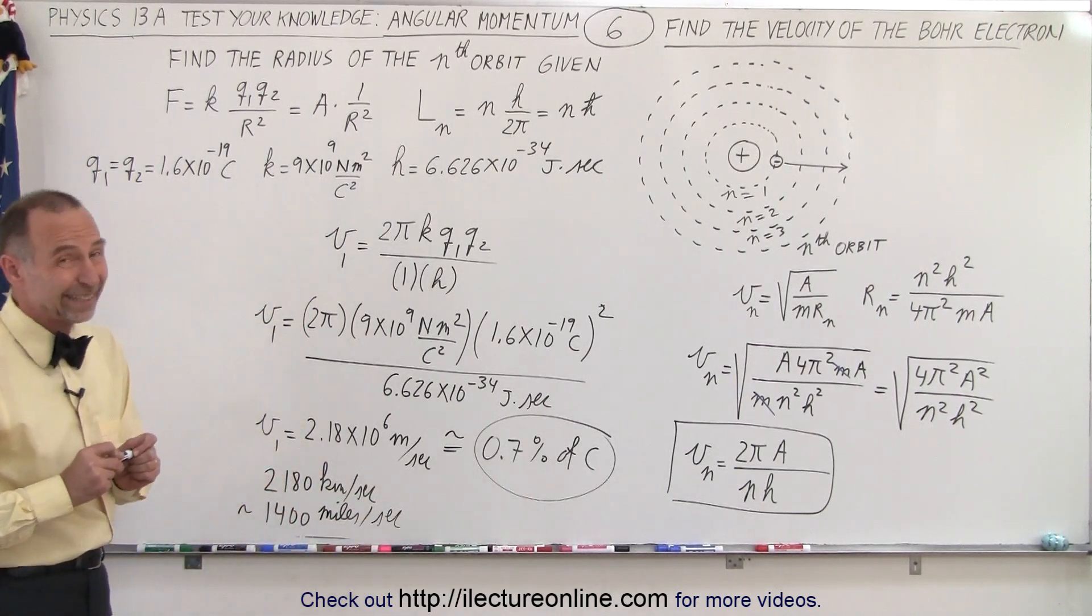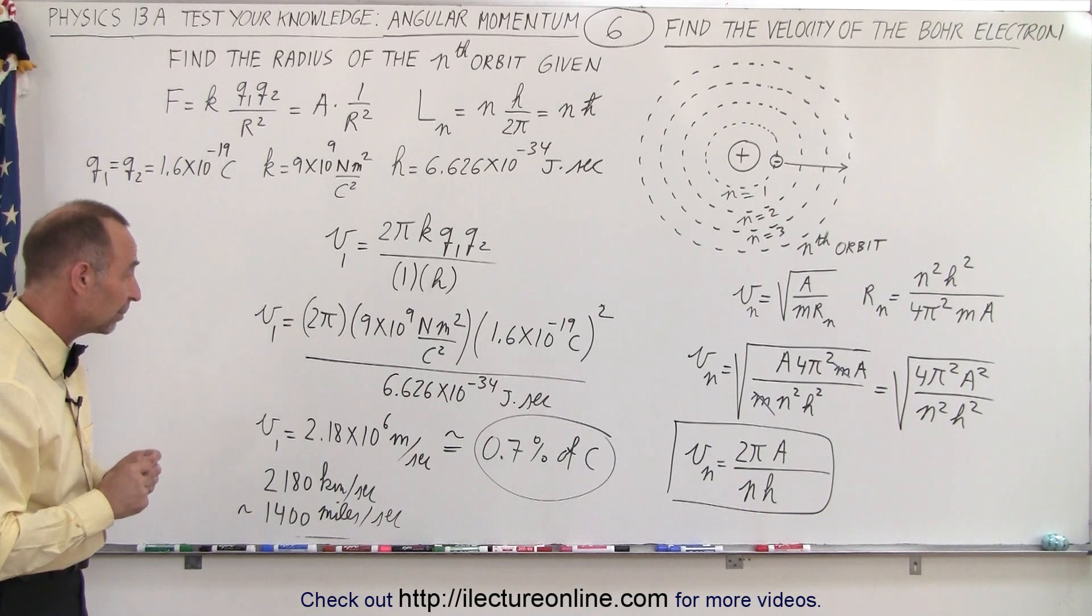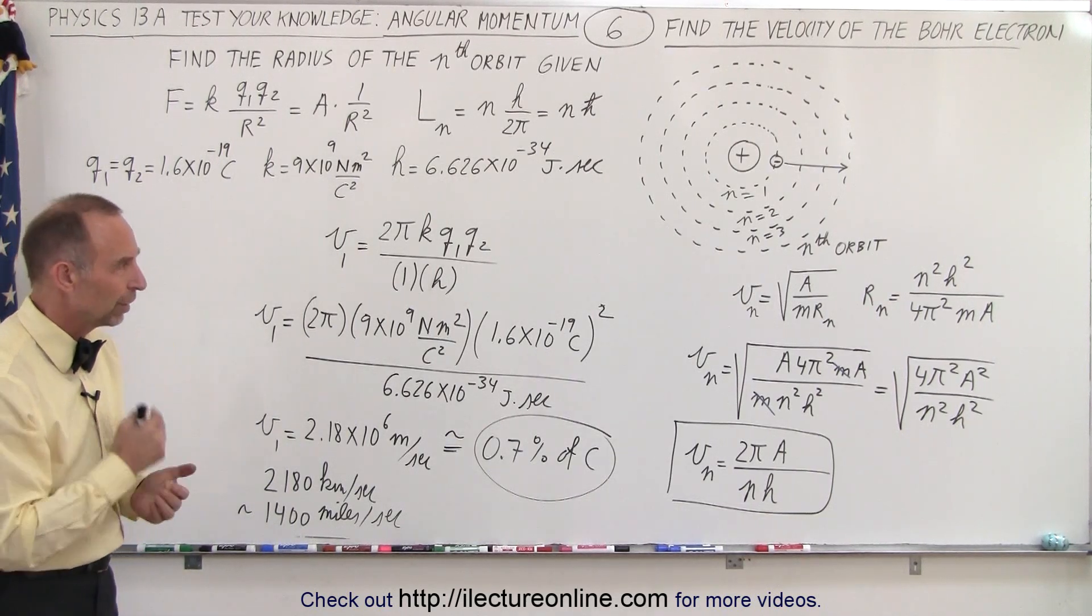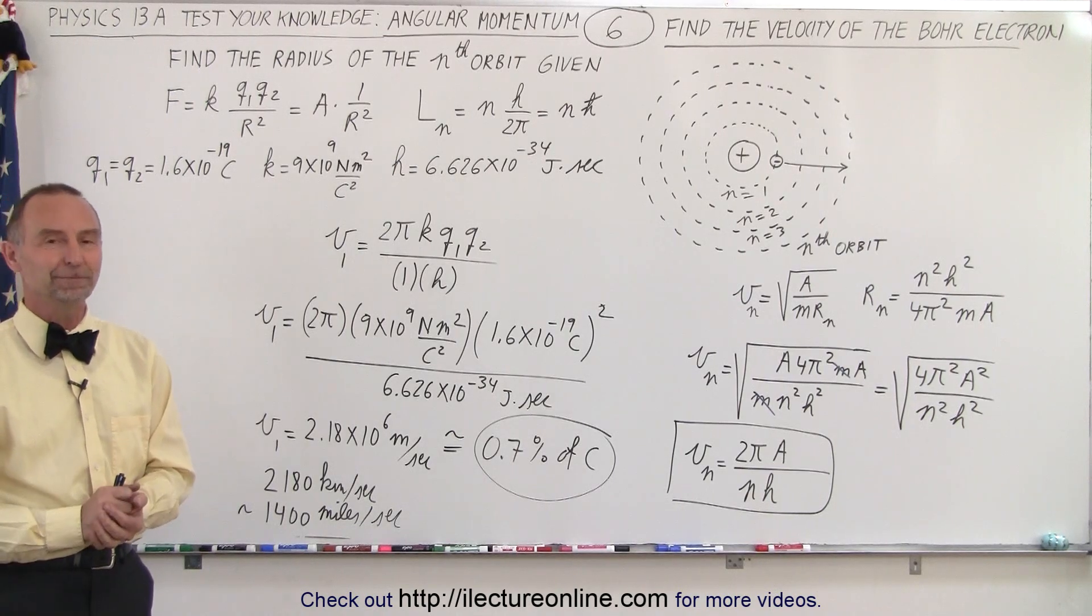Just to put things in perspective, that's pretty quick for that electron, but that's about how fast electrons travel in the innermost orbit of the Bohr atom, and that is how it's done.